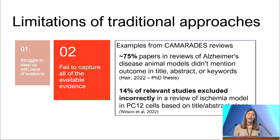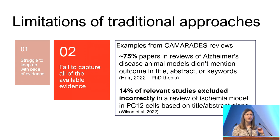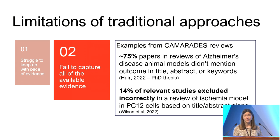The second limitation is that there's sometimes a failure to capture all of the available evidence — we found this particularly in our research area. We focus on animal experiments and in vitro experiments, and anyone who's read those articles will know that there's not just one experiment in a paper. Sometimes there are four, five, or six. And there's not just one PICO element — there are so many outcome measures, sometimes multiple treatments, even multiple animal models.